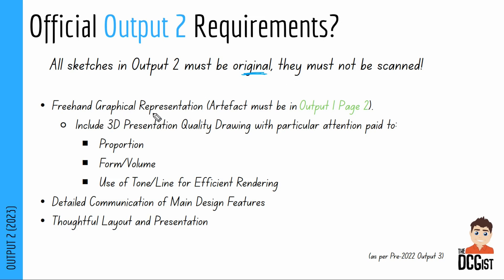In terms of the official requirements, you need a freehand graphical representation. The artifact, I would say, should be an output 1 page 2 — one of the ones that you compared. You need to include a 3D presentation quality drawing with particular attention paid to proportion, form and volume, and use of tone or line for efficient rendering. Your 3D presentation quality drawing is really important. When they say presentation quality, what they really mean is 3D rendered so that it looks realistic. Then you need detailed communication of the main design features — that's where other sketches and their annotations come in.